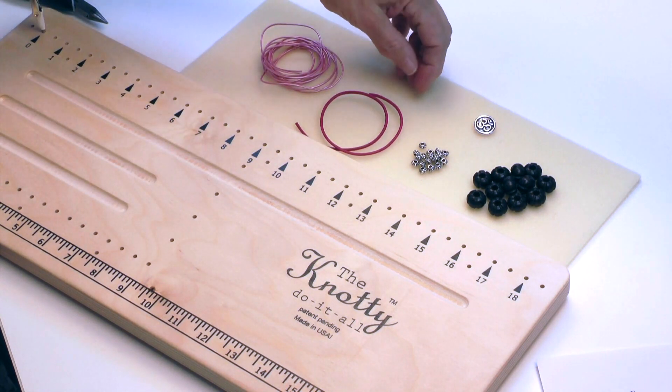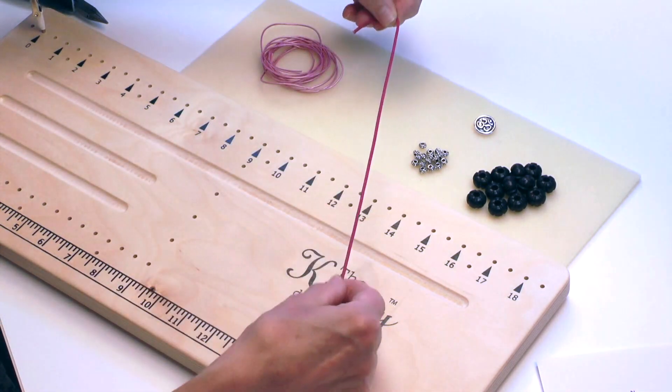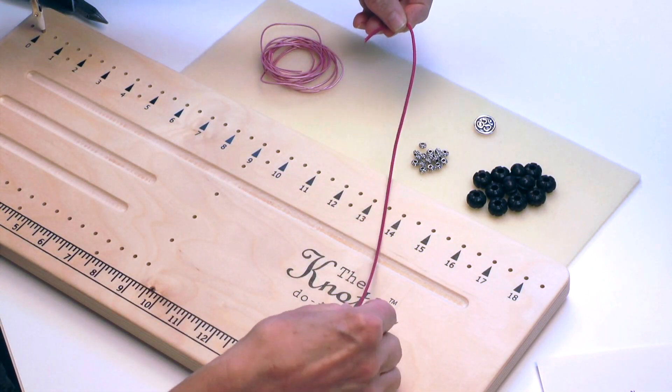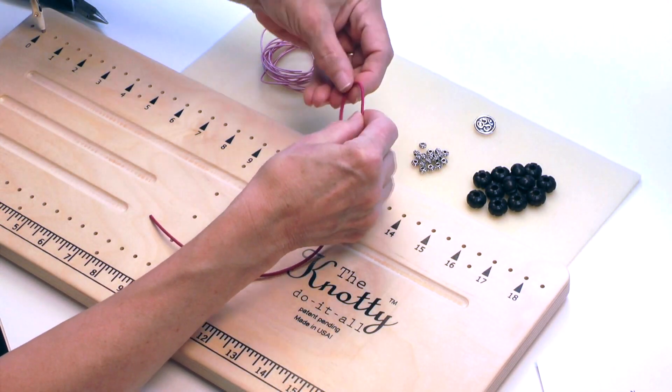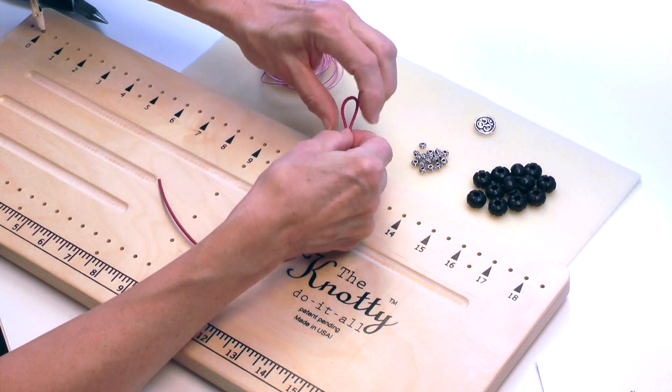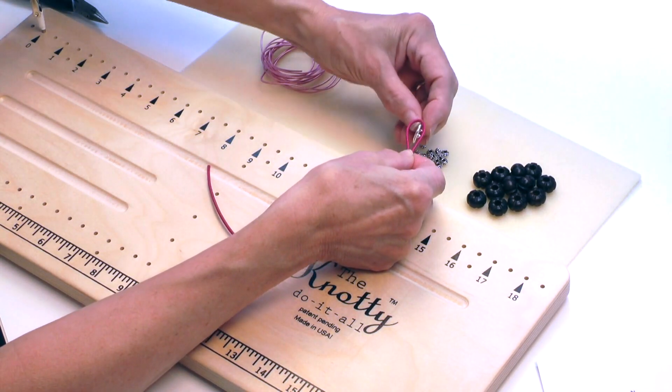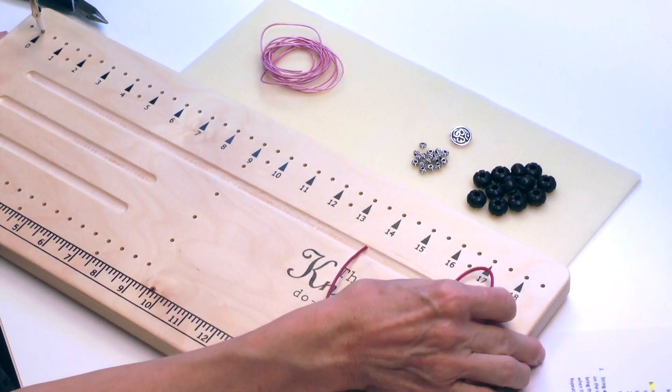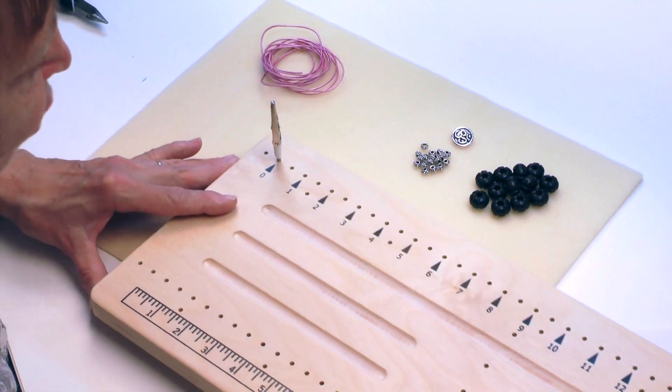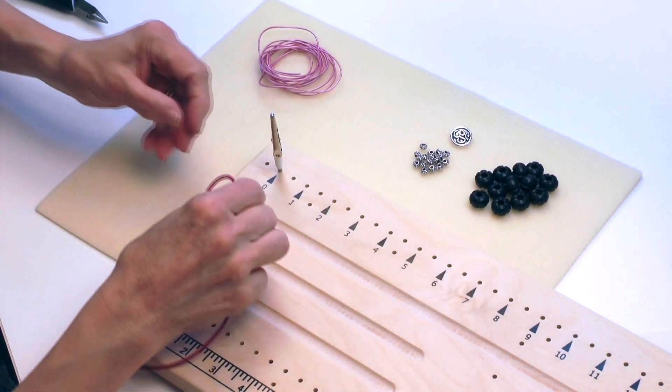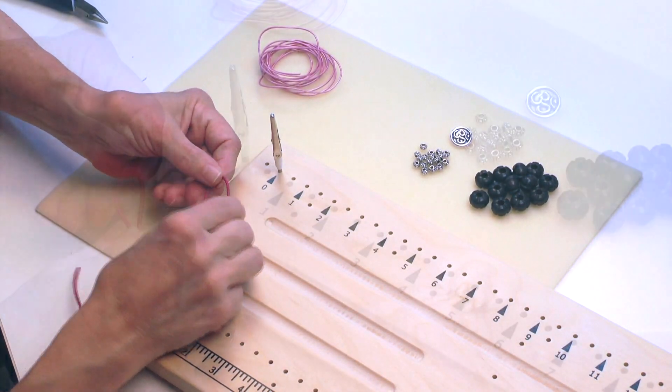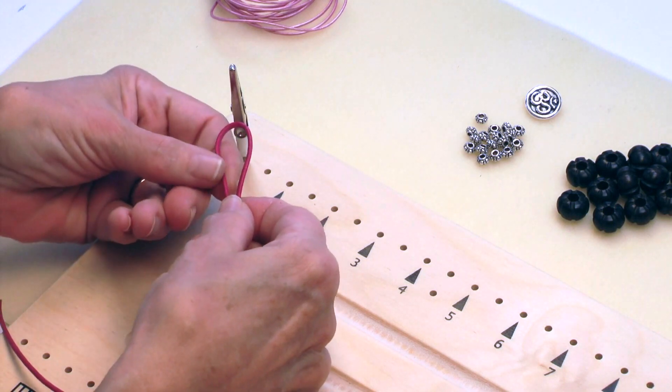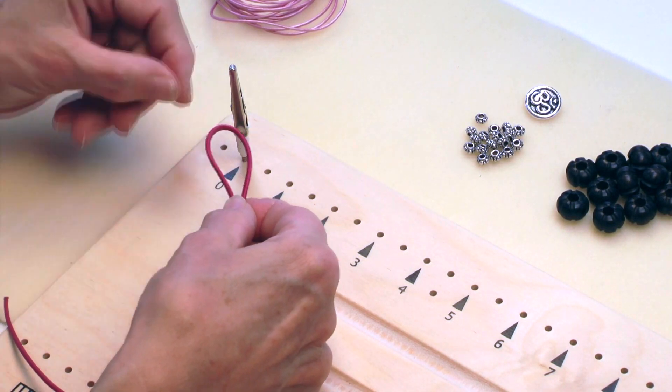In this particular case my inside cord is quite a bit larger than my outside cord and I do want to use my thicker cord to make the loop for the button because it's just going to be more substantial. So what I'll do is take my knotty do it all board and I will fold my thicker cord over so that I have a loop at the top.